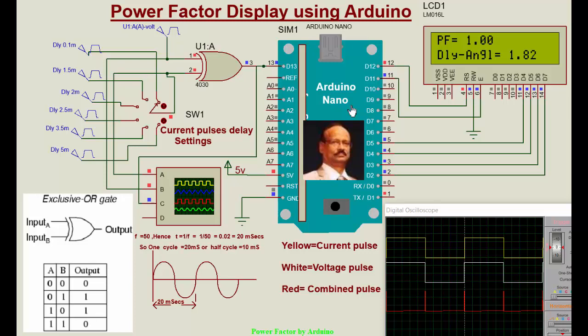We have taken an LCD display and connected a digital storage oscilloscope. These are all simulation circuits. We have taken an exclusive-OR gate here, feeding to pin number 13 of the Arduino Nano. We have an arrangement for changing the delay angle, because the voltage is fixed.